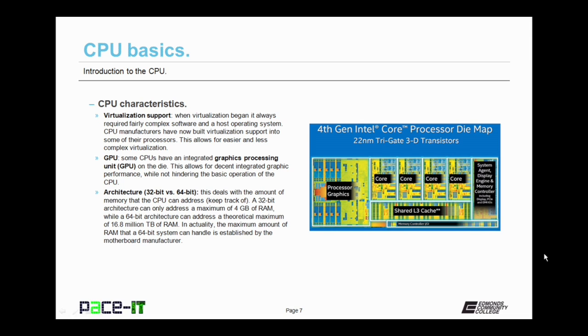Last but not least under the CPU basics is the architecture. Now this is either 32-bit or 64-bit. This deals with the amount of memory that a CPU can address, that is keep track of. A CPU that has a 32-bit architecture can only address a maximum of 4GB of RAM.